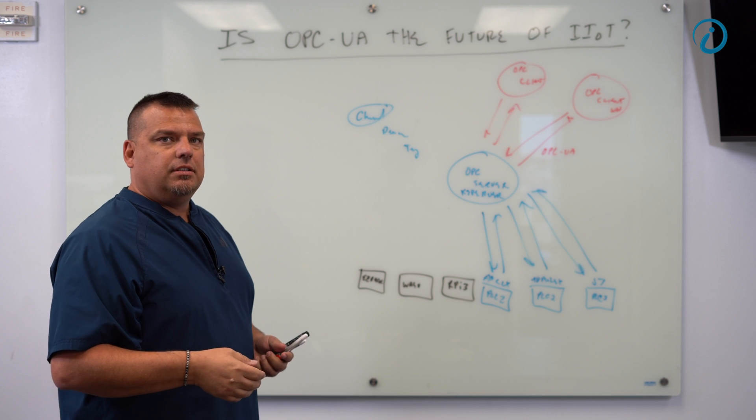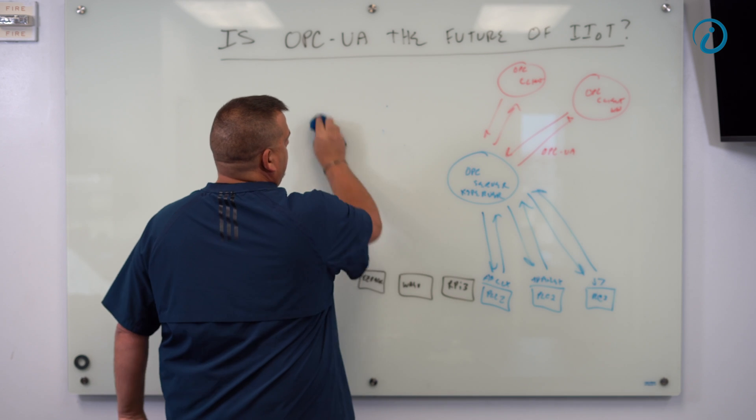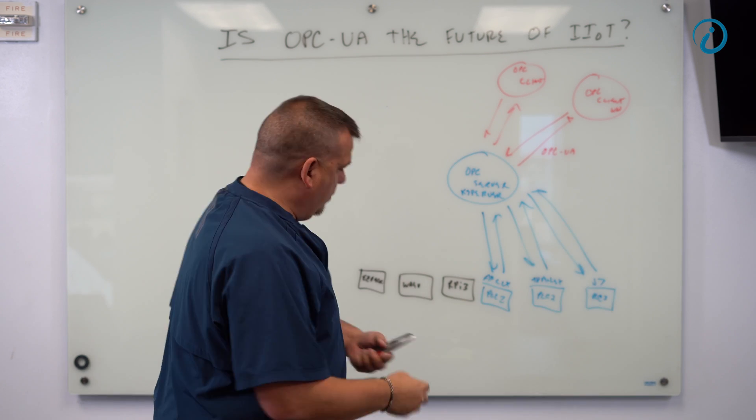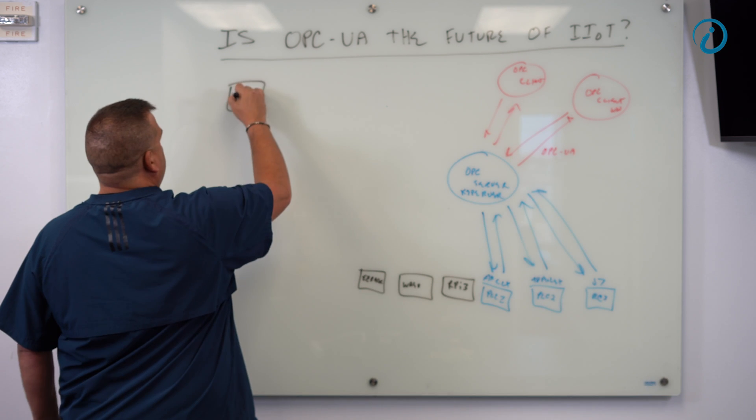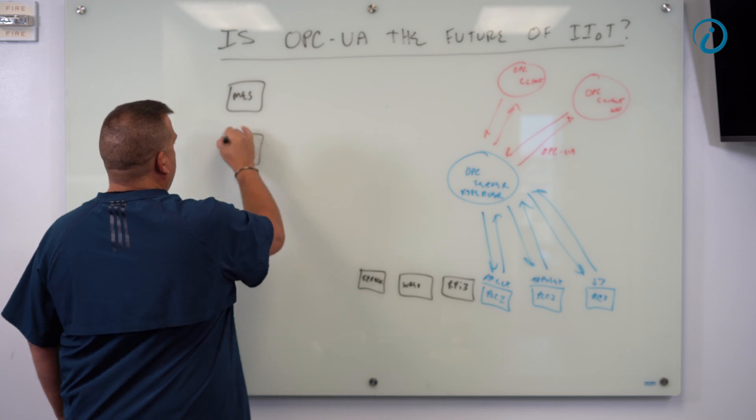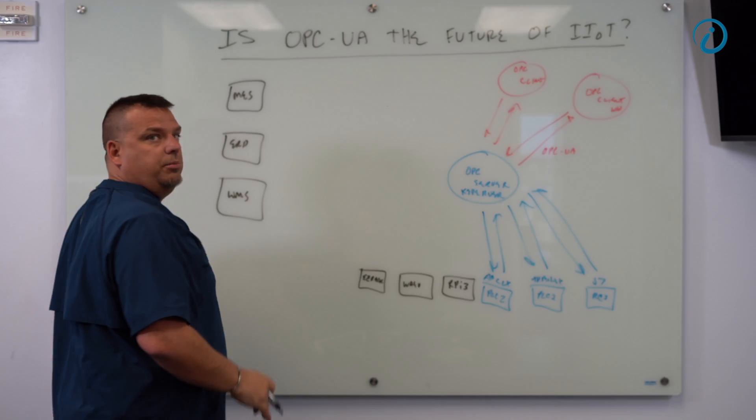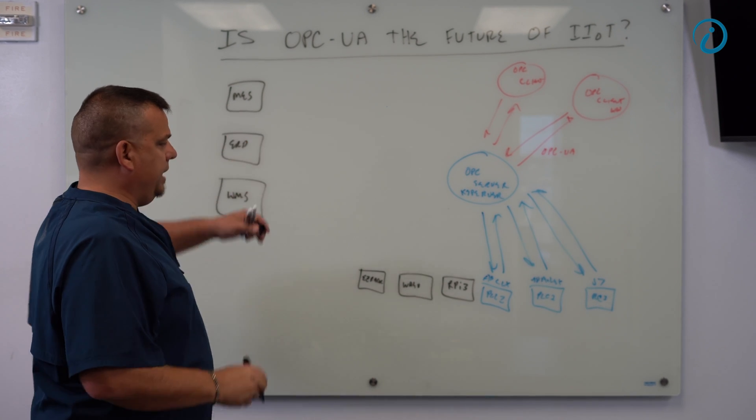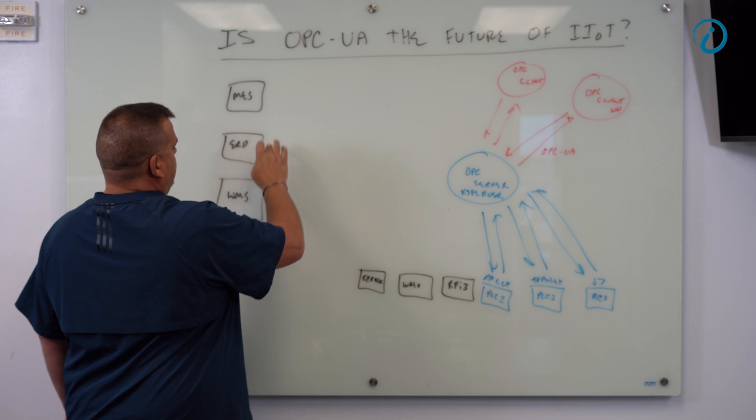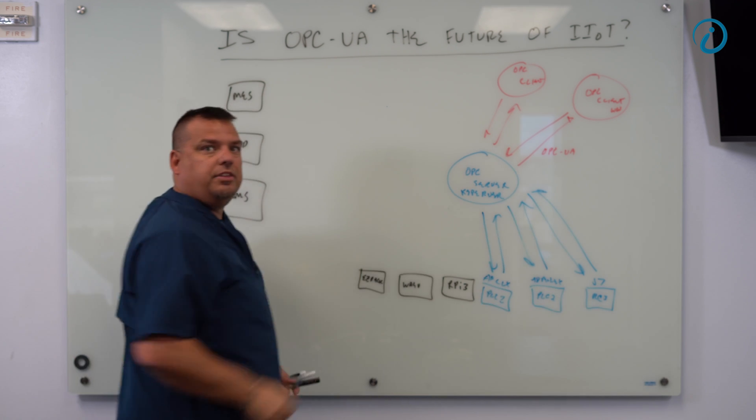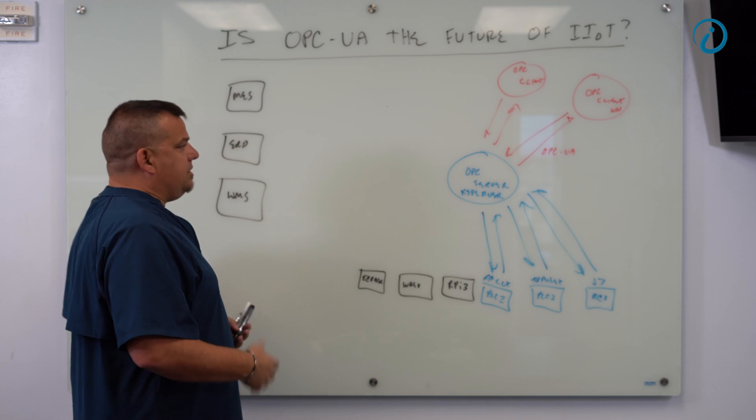When we digitally transform a business, let's say this architecture is already in place, and we're going to go ahead and digitally transform the business. What we want to do is we want to now integrate this stuff over here, and we want to integrate the existing MES system and the existing ERP system, and we want to integrate the existing warehouse management system, the WMS, the ERP, and the MES. What the OPC UA people will tell you is that you can integrate MES, ERP, and WMS with the existing OPC infrastructure, the OPC UA infrastructure. And in some cases, that's true.